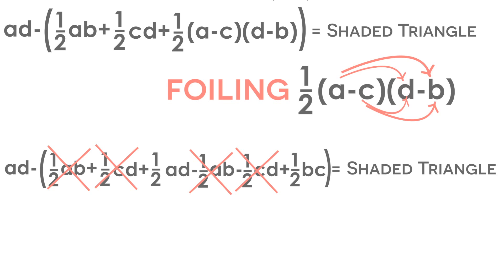And if we simplify this whole entire equation, we have AD minus, in parentheses, one-half AD plus one-half BC. And now we can get rid of the parentheses.